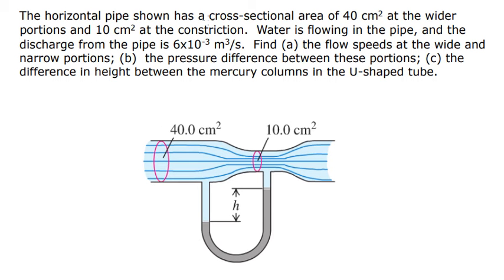Has a cross-sectional area of 40 centimeters square at the wider proportion, this is about this one. And we have 10 square centimeters at the constriction, this one here.